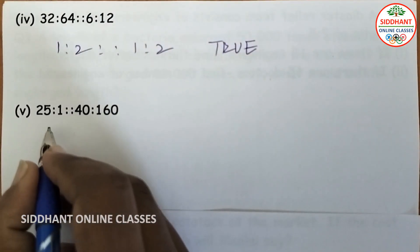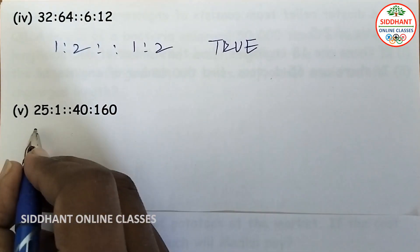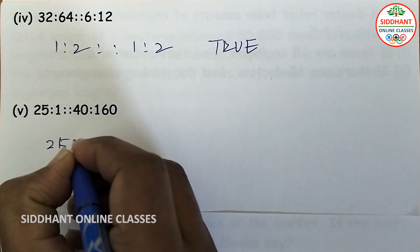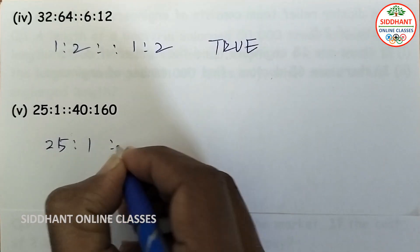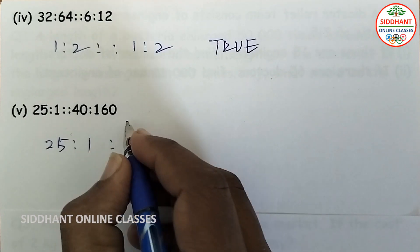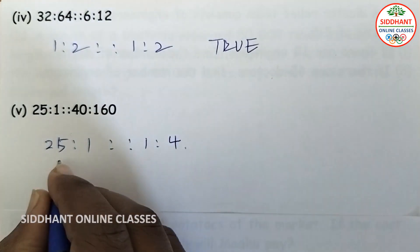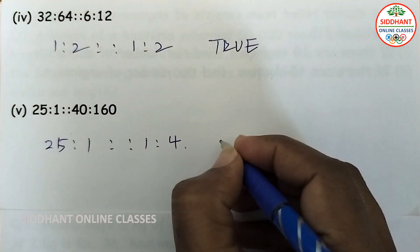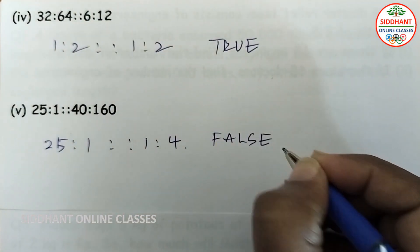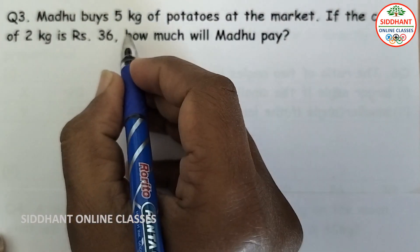Fifth proportion: 25 is to 1 and 40 is to 160. The ratio 40 to 160 divided by 40 gives 1 is to 4. The ratios are not the same, so the statement is false.